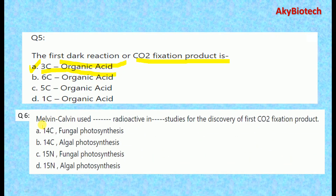Question six: Melvin Calvin used a radioactive isotope in his studies for the discovery of the first carbon dioxide fixation product. We have four options for this question.